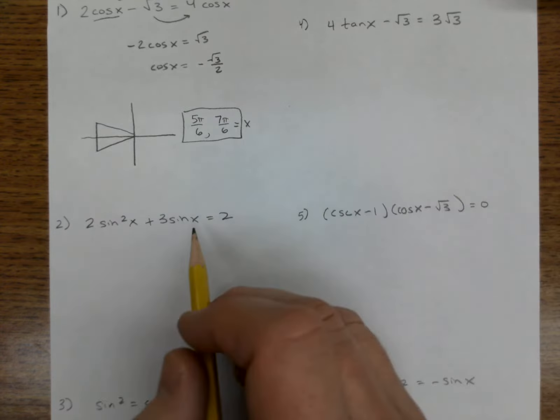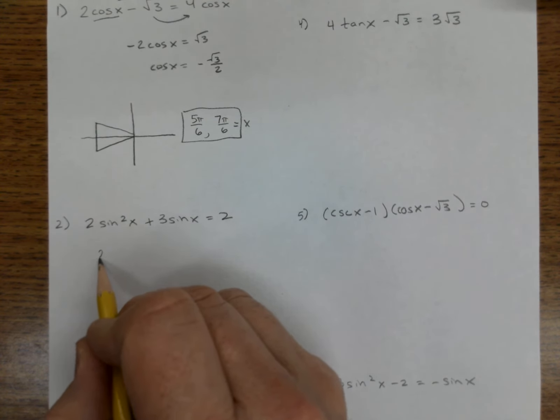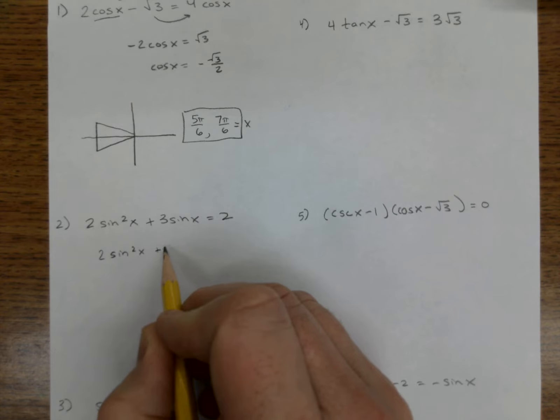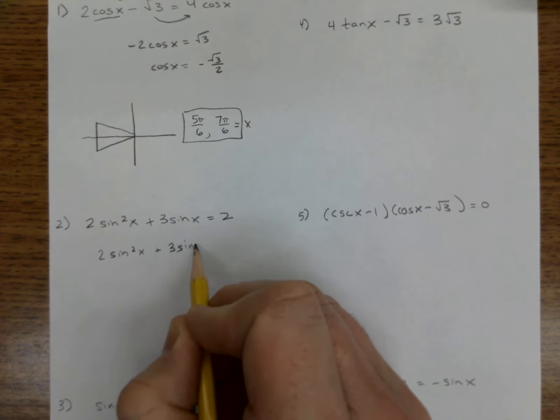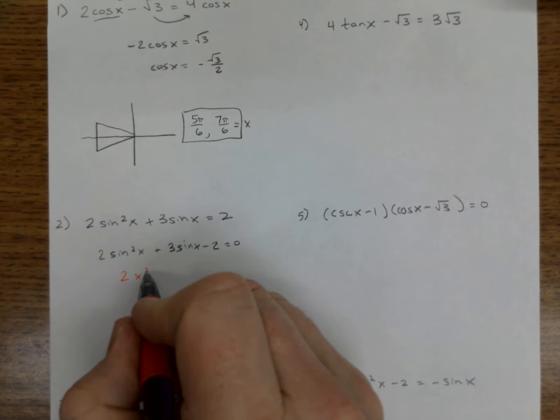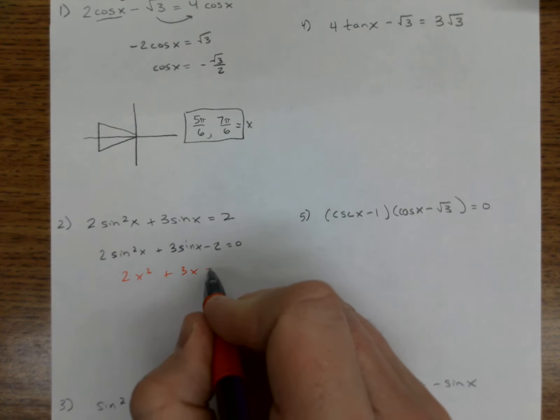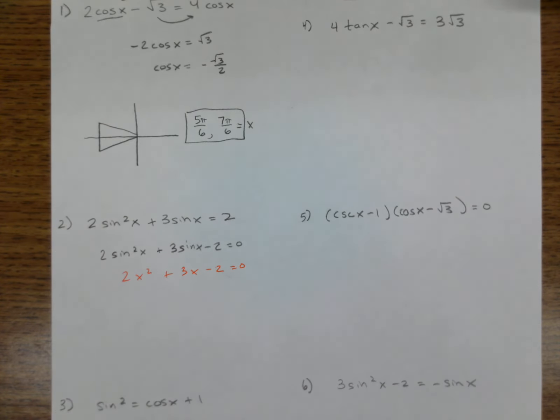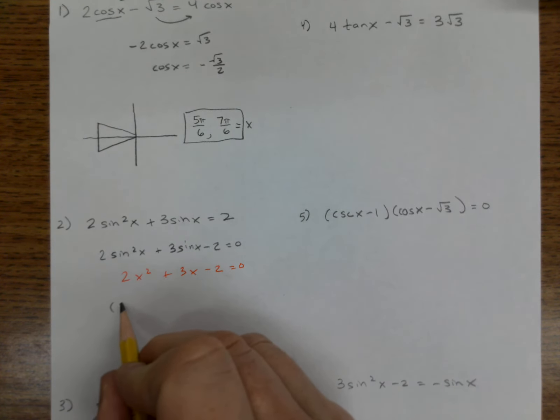All right, on the next one, well we want to subtract this 2 over here, and I'll have 3 sine x minus 2 is 0. And now I want to mentally see this as 2x² + 3x - 2 = 0, and that's a factoring problem. We could factor it into (2 sine x - 1)(sine x + 2).